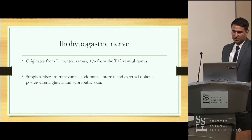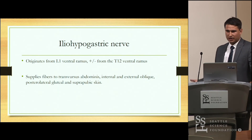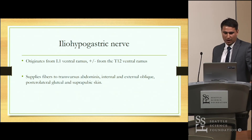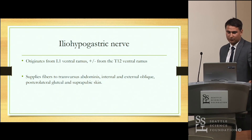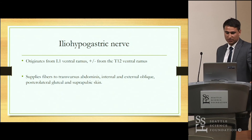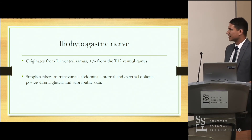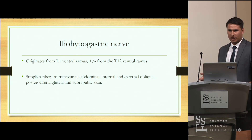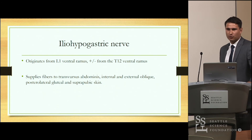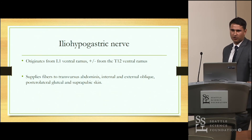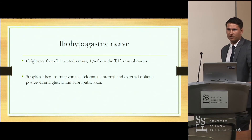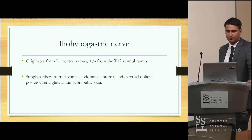The iliohypogastric nerve originates mainly from the L1 ventral rami but can receive innervation from the T12 nerve. The iliohypogastric supplies fibers to the transversus abdominis, the internal and external obliques, the posterior gluteal, and the suprapubic skin. So if there's irritation of the 12th nerve, it can also affect the iliohypogastric nerve, causing referred pain from the groin to the abdomen. This is why it's so hard as a clinician to pinpoint the source — groin pain might make you think kidney stones, when in fact the iliohypogastric nerve is actually causing the pain.